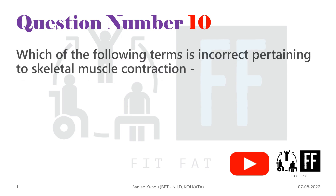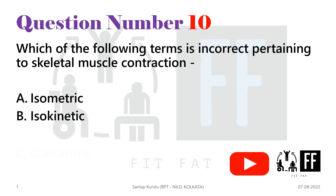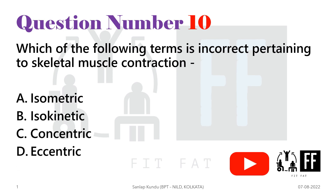Question number 10. Which of the following terms is incorrect pertaining to skeletal muscle contraction? Option A isometric, option B isokinetic, option C concentric, and option D eccentric.